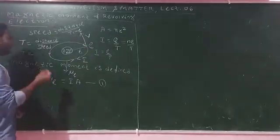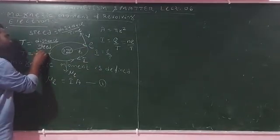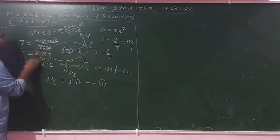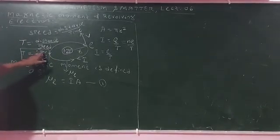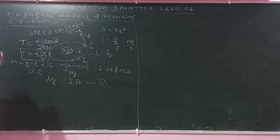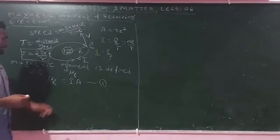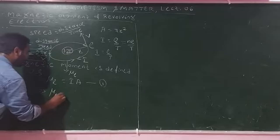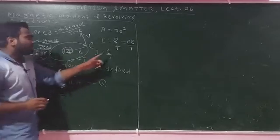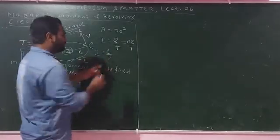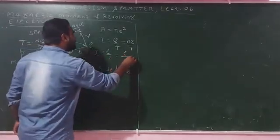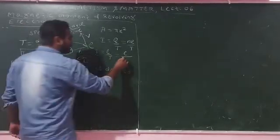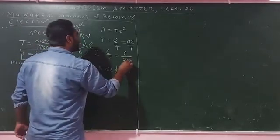The circumference of the circular path is 2πr, so T equals 2πr divided by v. Therefore I equals E divided by T, which equals Ev divided by 2πr.